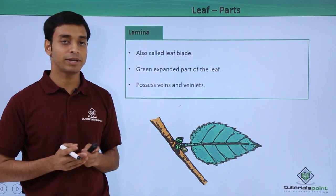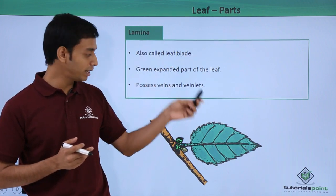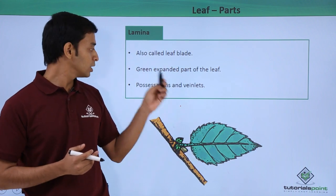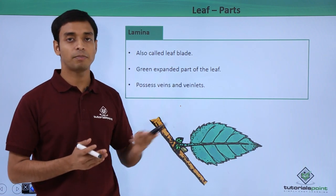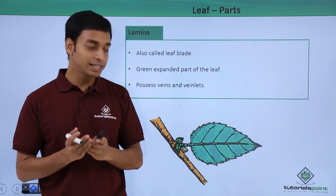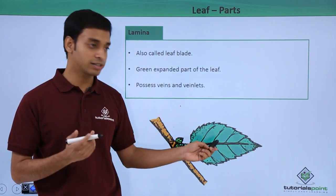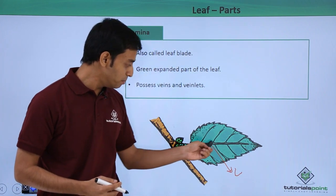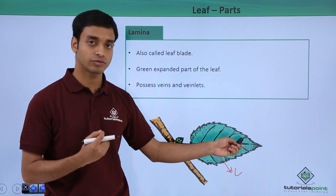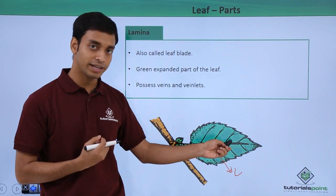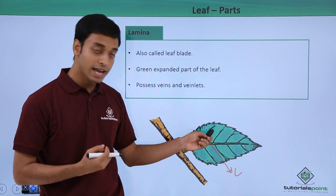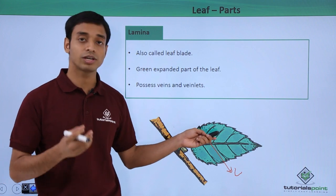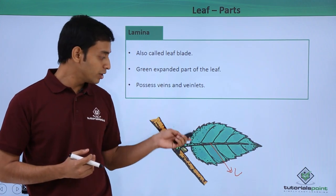The third structure of the leaf is known as the lamina, also known as the leaf blade. This whole flattened green expanded part of the leaf is the lamina. The leaf lamina has got veins and veinlets. There is the midrib or the main axis of the vein; from the midrib, branches arise, and from these branches very small hair-like vein structures are formed, which are known as the veinlets.